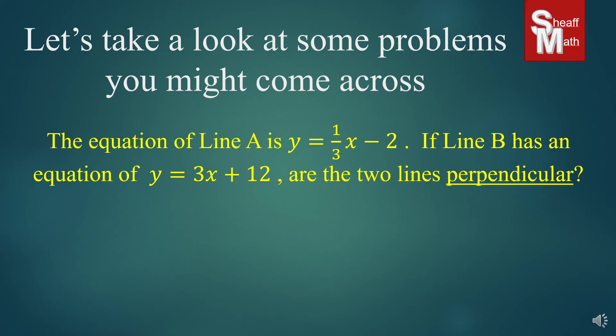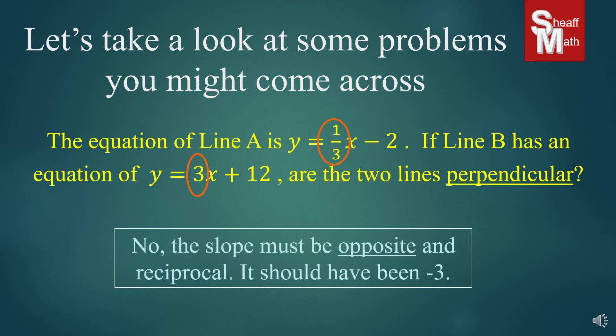Now let's say you had this one. The equation of line A is y equals 1/3 x minus 2. If line B has an equation of y equals 3x plus 12, are the two lines perpendicular? Let's look at their slopes: 1/3 and 3. Are those opposite reciprocals? Almost — they're reciprocal, but they are not opposite. The slope has to be both opposite and reciprocal, so it should have been negative 3 for a perpendicular slope. So no, these lines are not perpendicular.